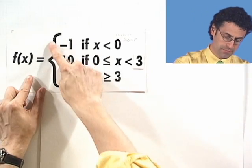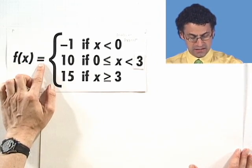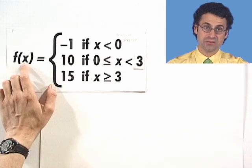First of all, a big bracket here. What's going on? Well, f of x is defined to be one of three things, depending upon the value of x.